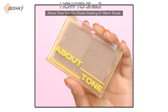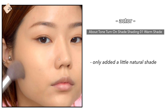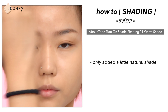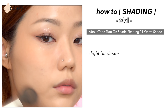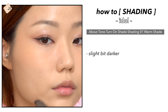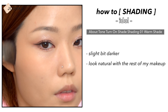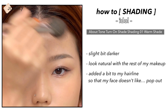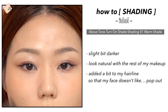Now I'm gonna do the outer shading. I'll be using About Tone's Turn On Shading No. 1 Warm Shade. For actor makeup, I only added a little natural shade. For idol makeup, I made it slightly darker so it looks natural alongside the rest of the makeup, since the overall look is colorful and deep. I also added a bit to my hairline so that my face doesn't pop out too much.